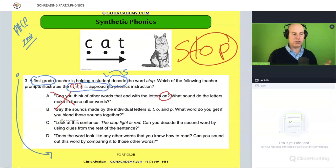And that's actually very close to D. Does the word look like any other words that you know how to read? Can you sound out this word by comparing it to those other words? So again, this is like looking at other words, and we're not trying to look at other words and compare other words and see if there's other words like stop that looks similar that we know how to decode. So that, really A and D are very similar and they're out because we're doing the synthetic approach.